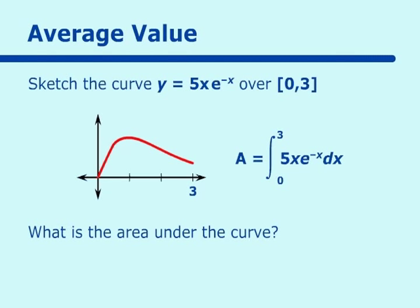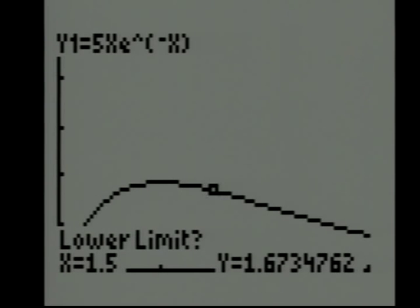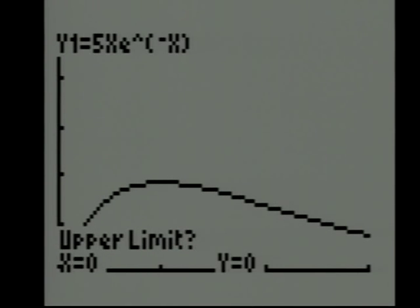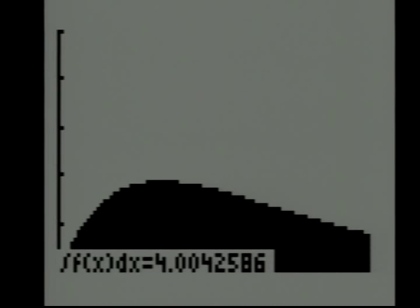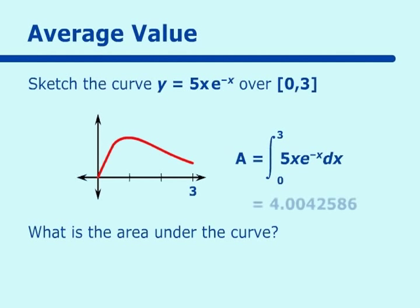I put this on my calculator. And you can see I have the curve. So if I want to find the area, I'll do second calc 7. And the lower limit is 0. The upper limit is 3. And we will get that calculation to be 4.0042586. I want to keep as many digits as possible in order to keep this accurate.